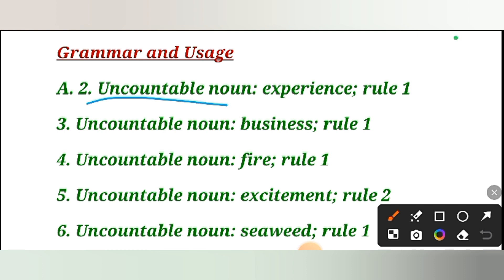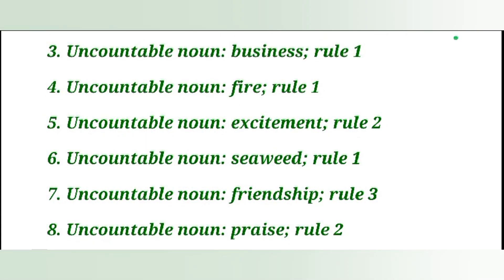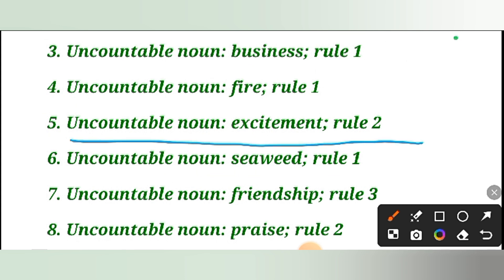The answers: First, uncountable noun is experience, rule number one. Second, uncountable noun is business, rule number one. Third, uncountable noun is fire, rule number two. Fifth, uncountable noun is seaweed, rule number one. Sixth, uncountable noun is friendship, rule number three. And the last is praise, rule number two.